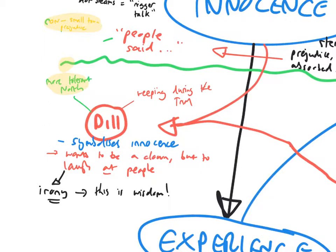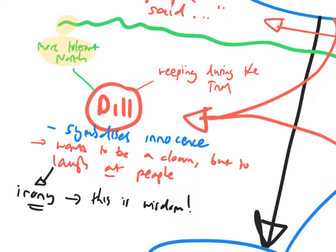Dill. What does Dill do? Well, one of the things that Dill does in the novel is he represents innocence. He is the only character, perhaps, who is truly innocent. Contextually, he comes from the more tolerant North states which did not practice segregation to such a degree and were seen as more liberal.